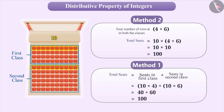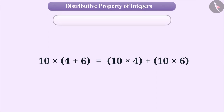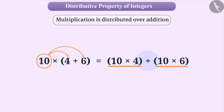The result was the same in both methods. So we can say that 10 × (4 + 6) and 10 × 4 + 10 × 6 are equal. We say that multiplication is distributed over addition. The distributive property tells us that we can either add the numbers in the brackets and then multiply the result with the number outside, or multiply the number outside the bracket with both numbers inside and then add the results.